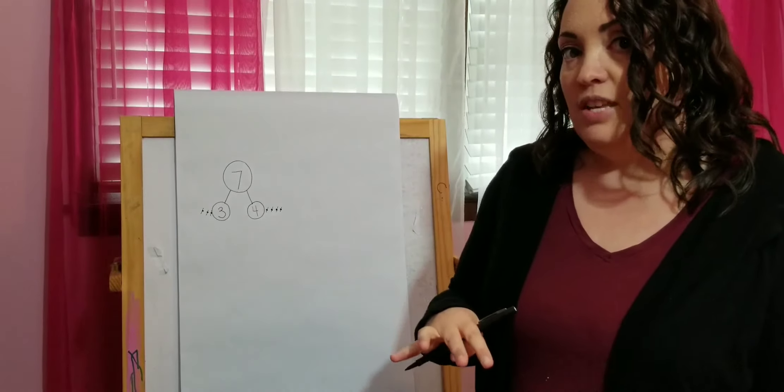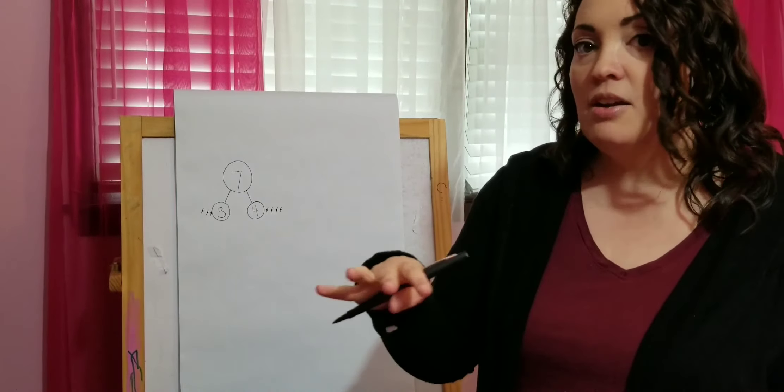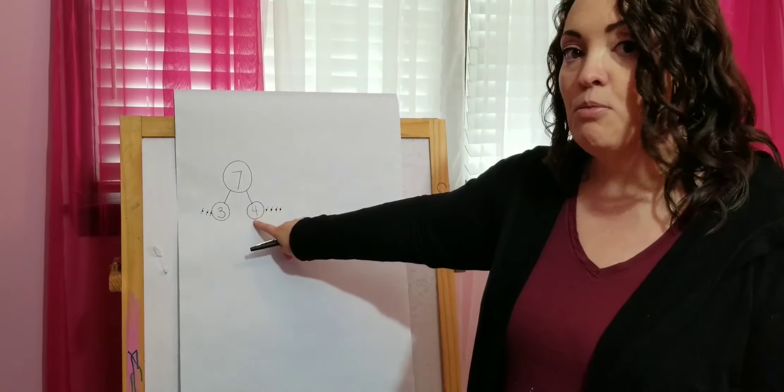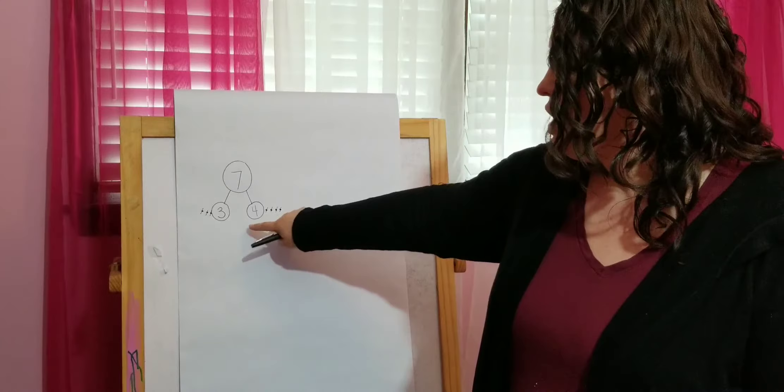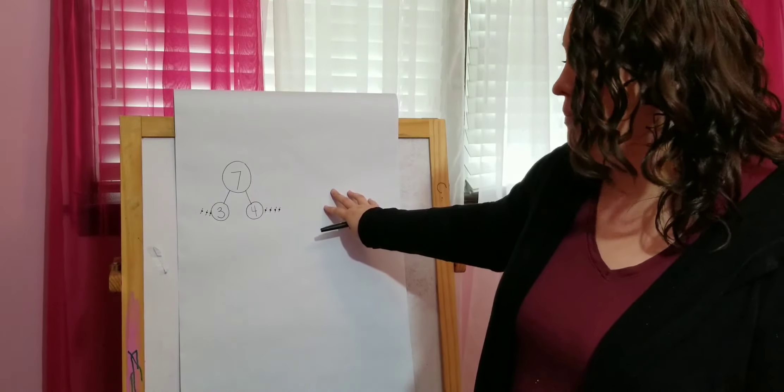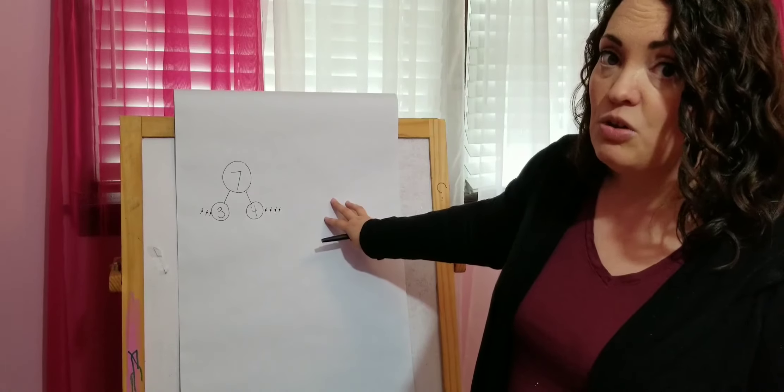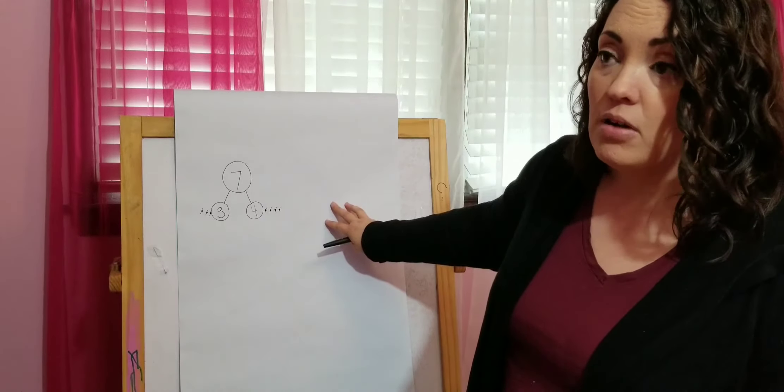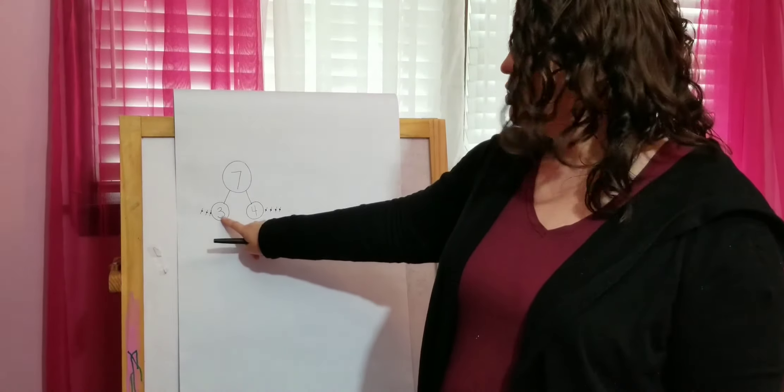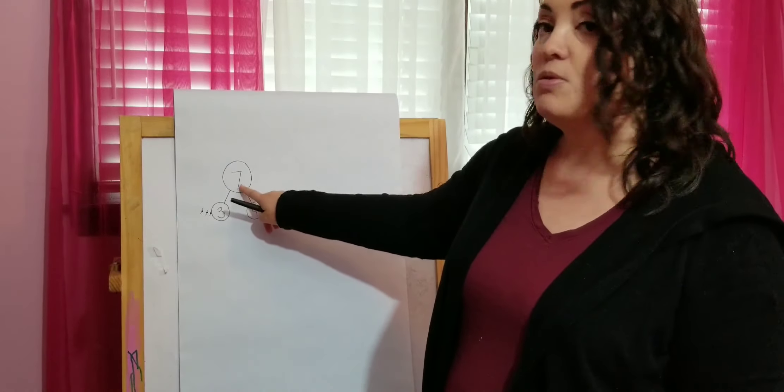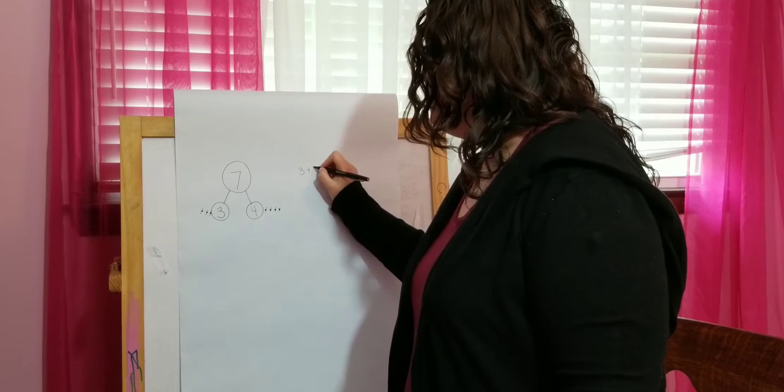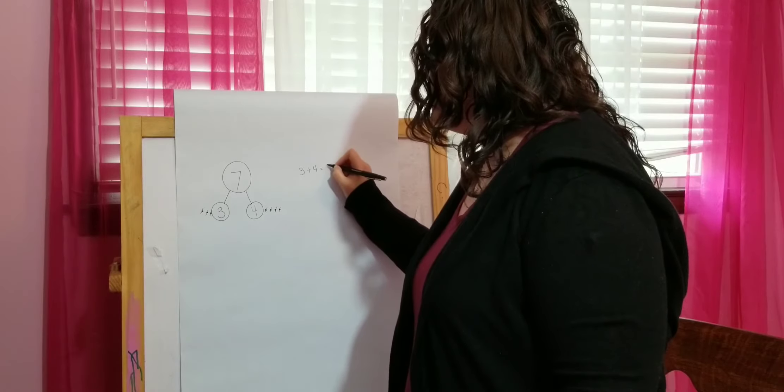Now the next part of this, and your kiddos have had plenty of practice doing this, is writing a number sentence from the number bond. Okay? So we're going to look at these numbers in the number bond, write our number sentence out next to it. So there are lots of different sentences that you could write, and all of them are fine. All of them are great. So the first one I think of is three plus four equals seven. So that's the one I'm going to write first. Three plus four equals seven.